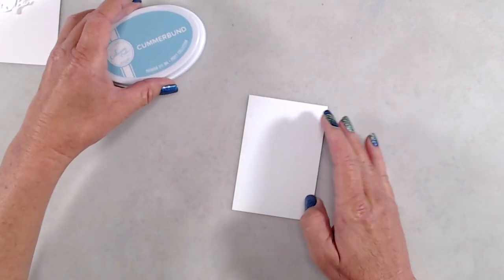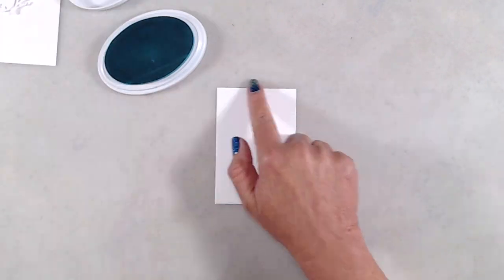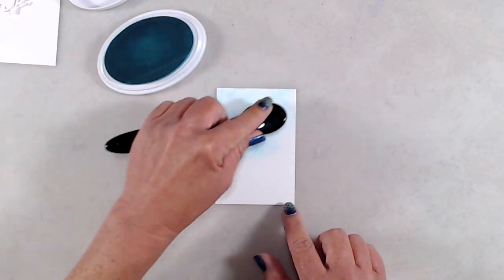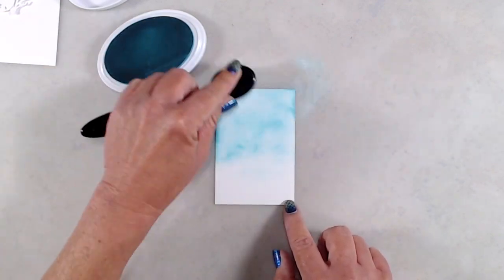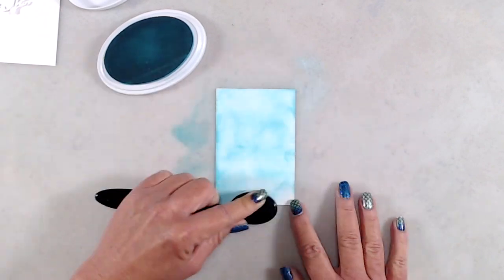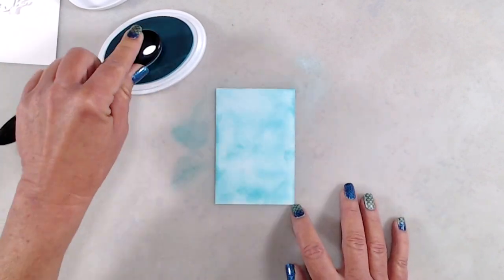I started out with a piece of cardstock that measures roughly two and three quarter by four and a half, and I just did quick ink blending on this piece of cardstock. This is the piece that's going to go behind my shaker window.